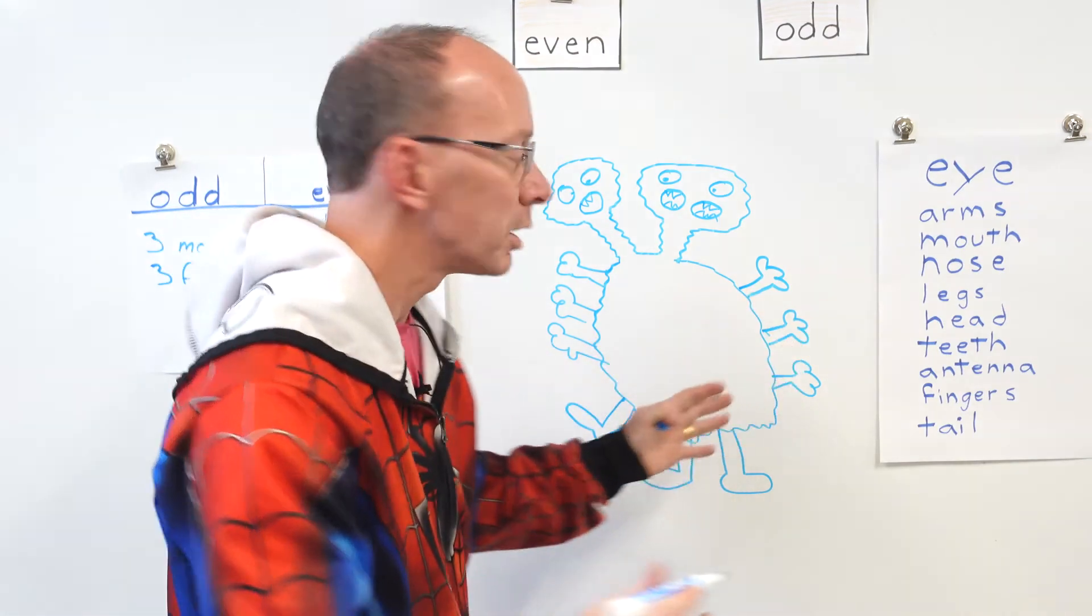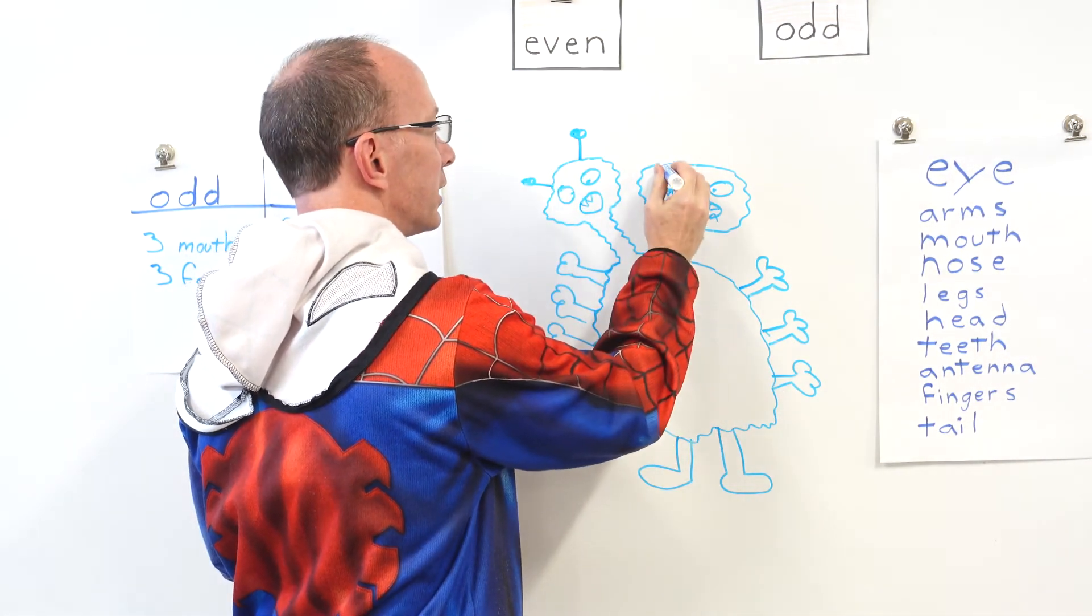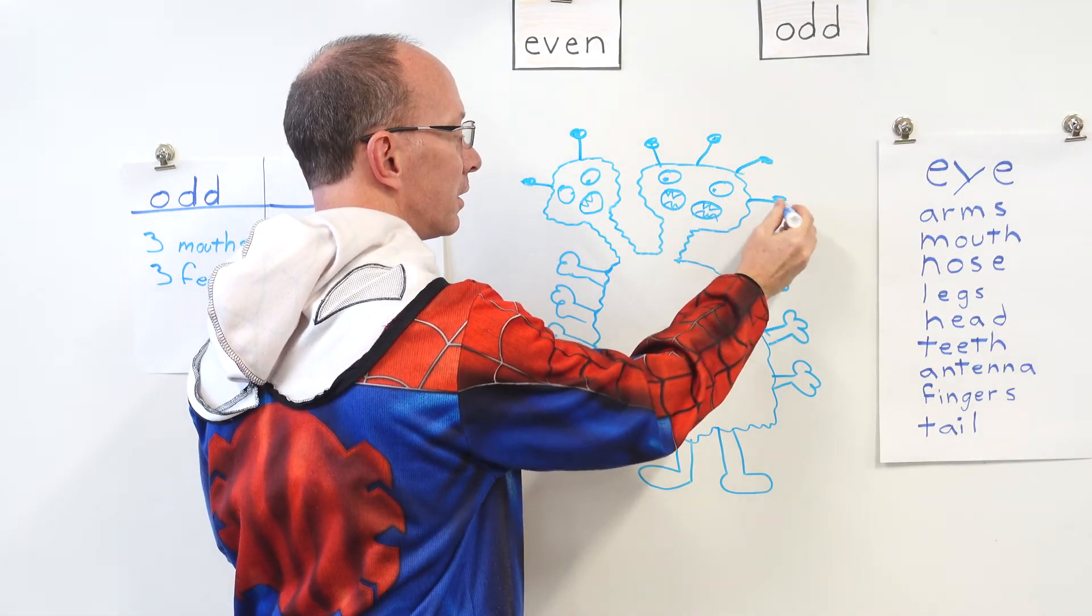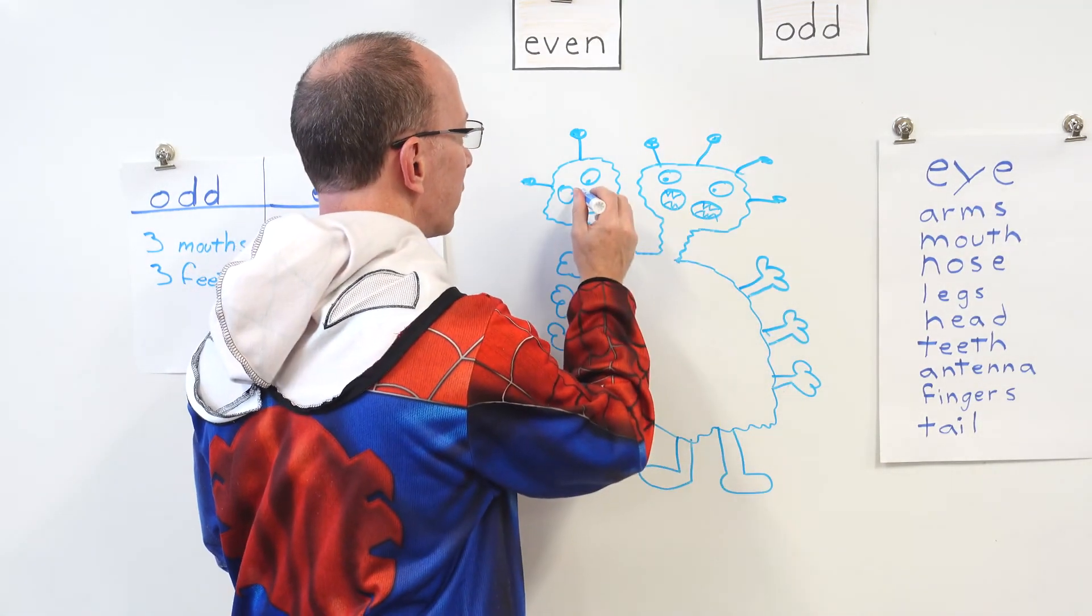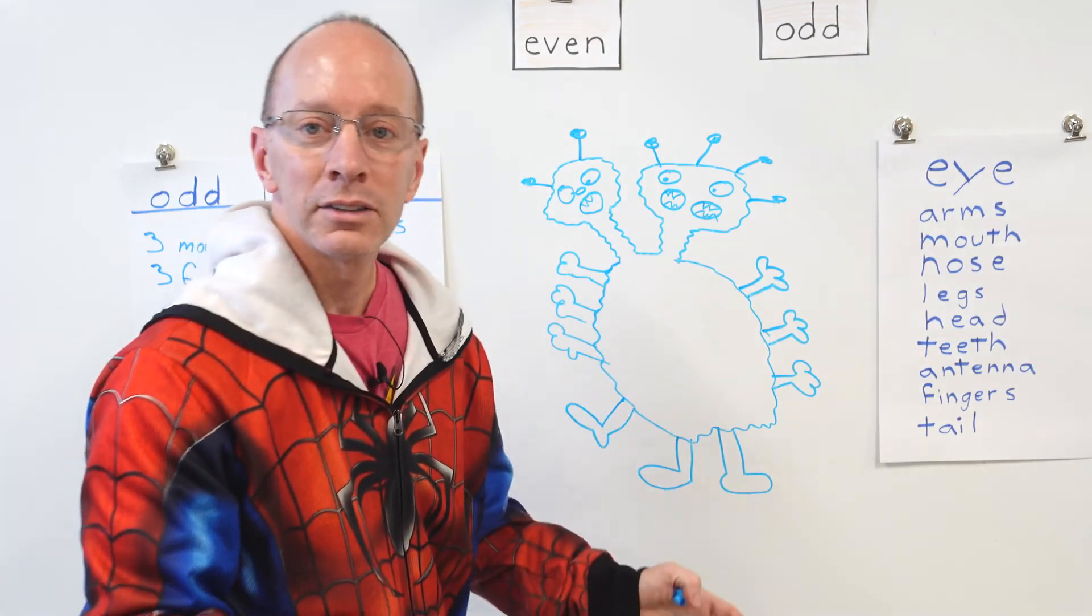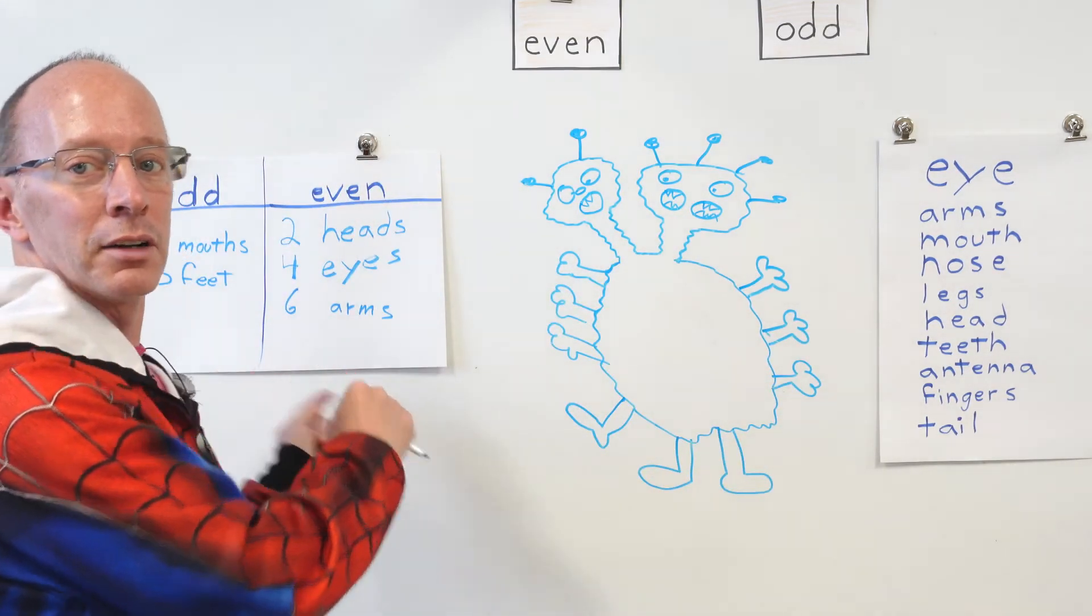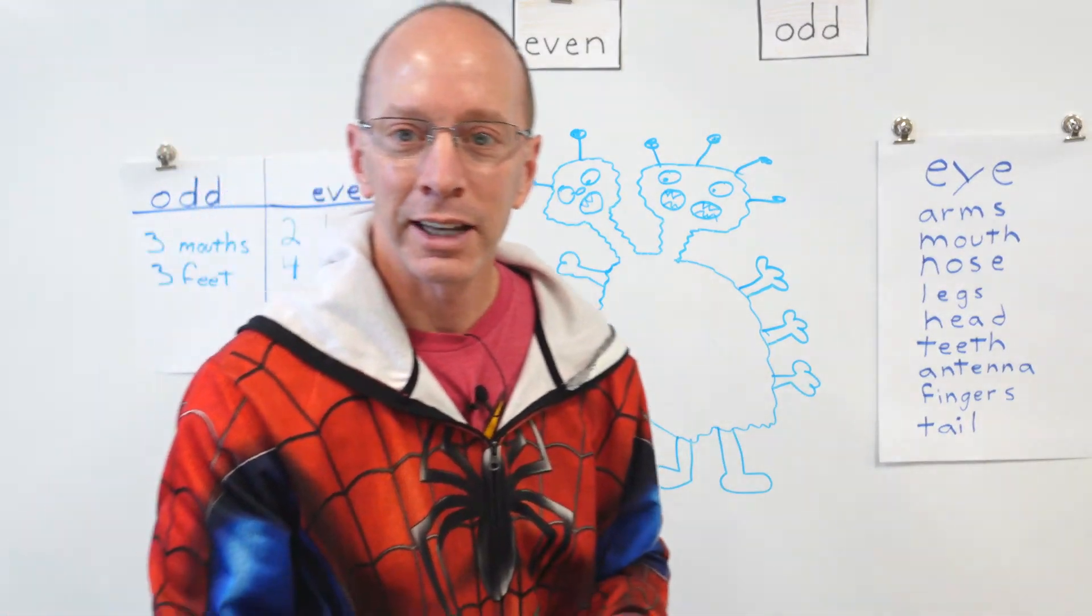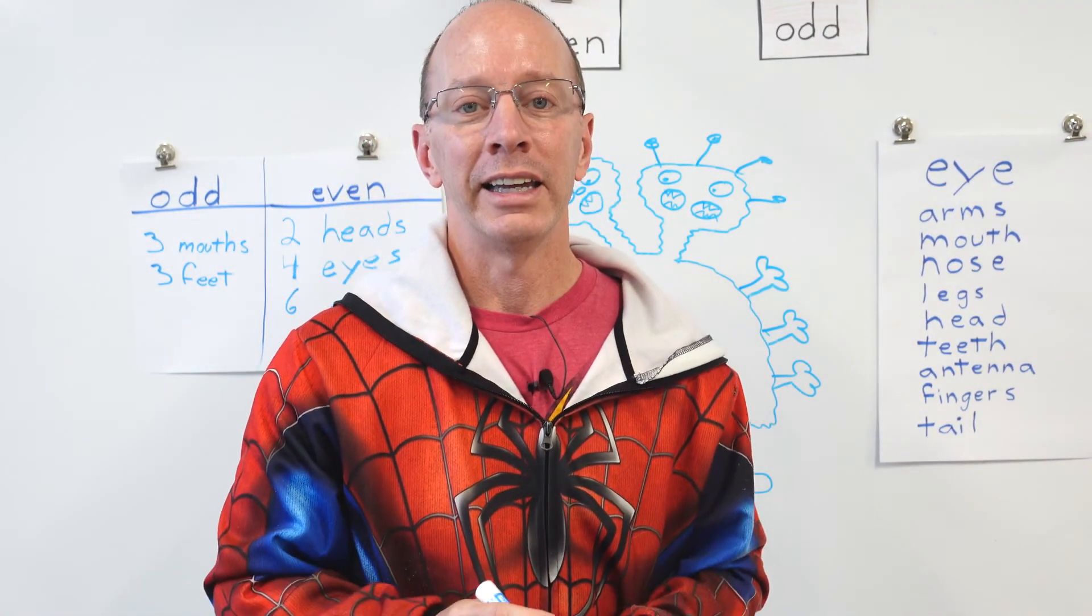And you can go totally crazy with your drawing. I'm just going to put some antennas up here. And maybe a nose. This guy will have a nose. And you've got the teeth. So all you have to do is when you draw your body parts, you put them right here in your chart. Bada boom, bada bean. How cool is that? So that's kind of a cool activity to do some work with odd and even numbers.